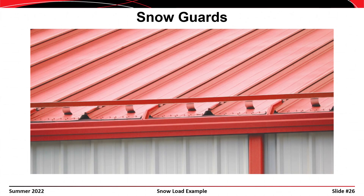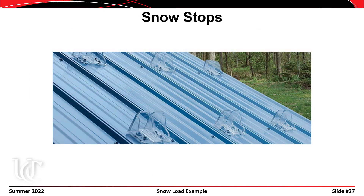As a second closing thought: when we used the dashed line in figure 7.4-1 for an unobstructed slippery surface, what does unobstructed mean? In some cases, you put snow guards or snow stops on a sloped sheet metal roof to keep snow from sliding off and hitting people or cars below. Snow guards are attached near the eaves; snow stops are distributed across the roof. While these obstructions protect people on the ground, they keep snow from sliding and actually increase the sloped roof snow load you must design for.